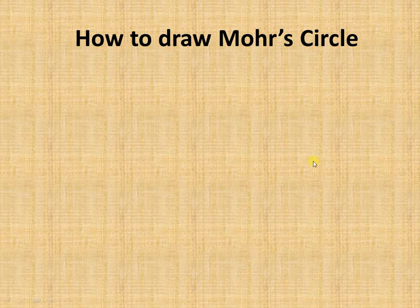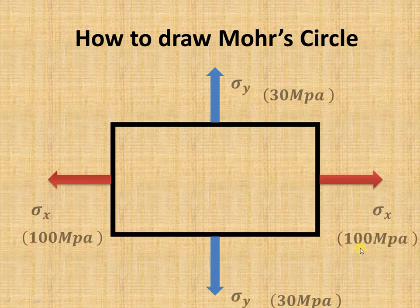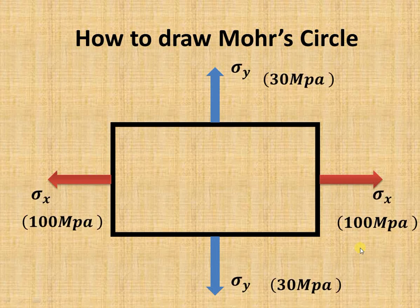Today we try to understand how to draw the Mohr's circle. Suppose we have a component subjected to a biaxial stress system — stresses in X and Y directions. Suppose in the X direction we have Sigma X equal to 100 MPa tensile, and in the Y direction Sigma Y equal to 30 MPa, also tensile. Using the Mohr's circle method we can find out the stresses on any plane inclined at an angle theta inside the material.